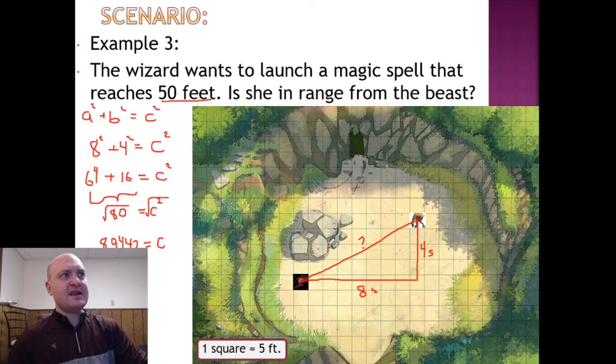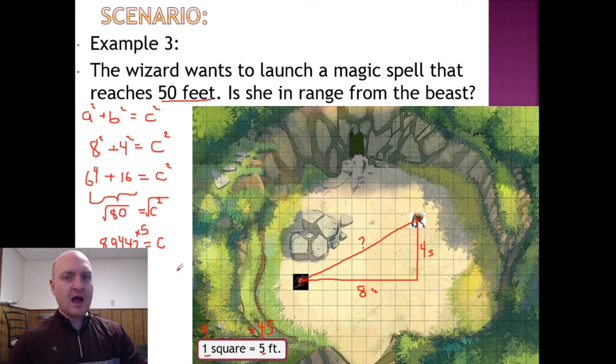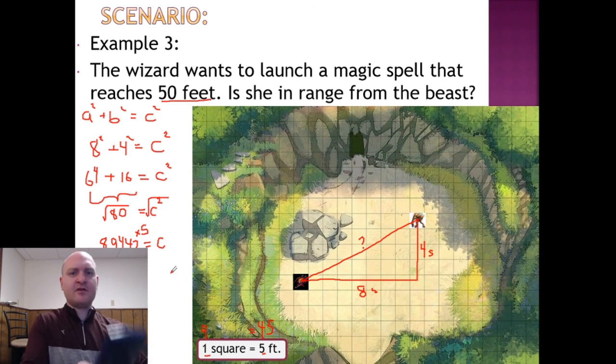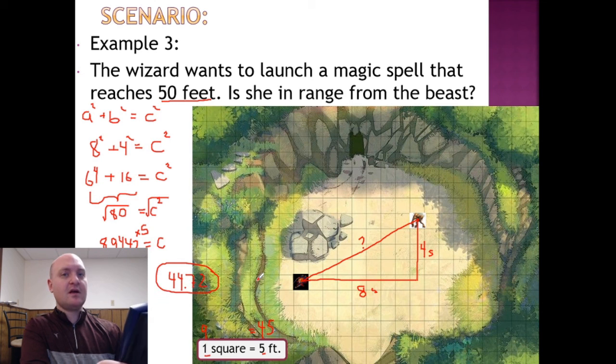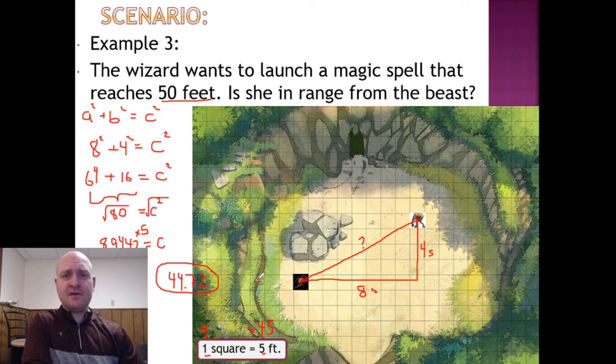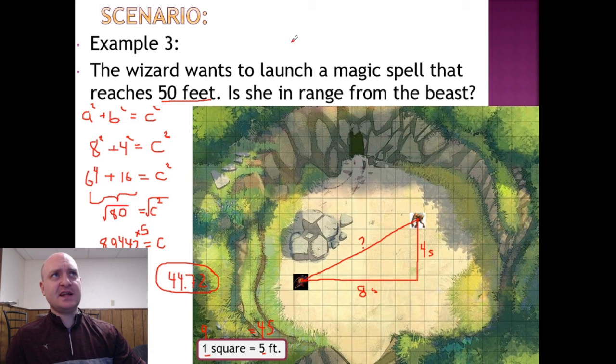So it's just shy of being nine squares. Well, if one square is five feet, in order to figure out our actual distance, I'm going to multiply the 8.9442 by five. And that will give me an actual distance between the wizard and the beast. On the calculator here I have 44.72. And that distance is less than 50. So I'm satisfied saying that the answer is yes, she's in range for her magic spell.